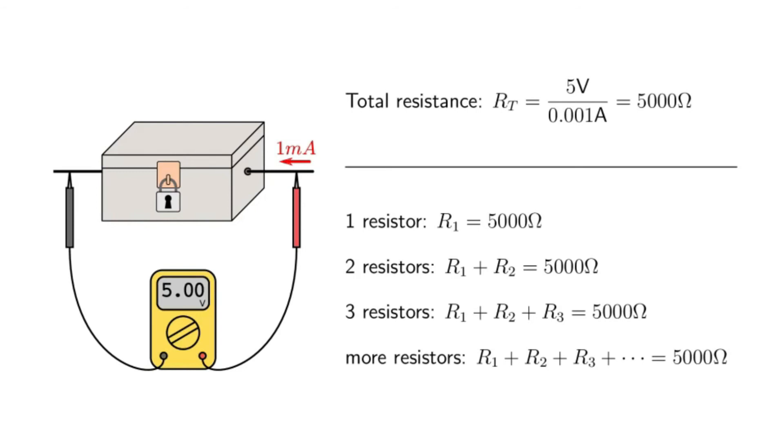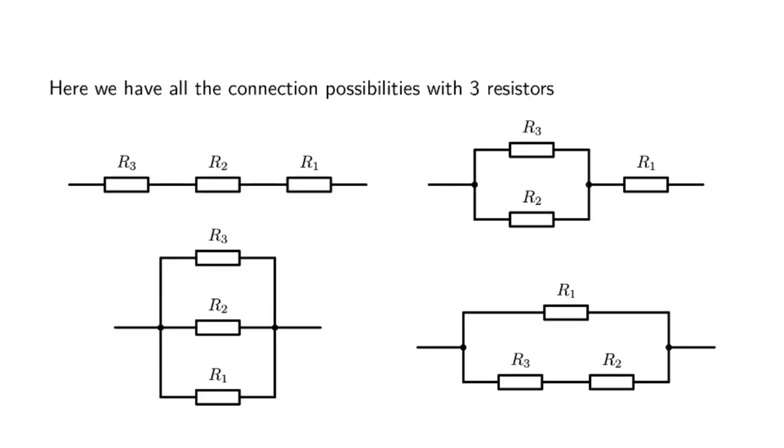Depending on the number of resistors connected in series, we will have different expressions. We don't know which one is correct. If we have one resistor, then R1 equals 5 kilo Ohms. If we have two resistors, then R1 plus R2 is 5 kilo Ohms. If we have three resistors, we have R1 plus R2 plus R3 equal 5 kilo Ohms. And so on.